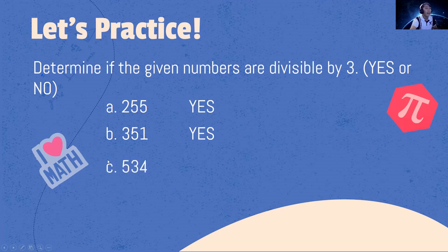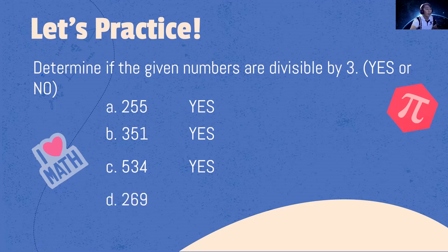534: 5 plus 3 plus 4 is 12, and 12 divided by 3 is 4 — so 534 is divisible by 3. How about 269? 2 plus 6 plus 9 is 17. 17 divided by 3 gives a non-whole number, so 269 is not divisible by 3.